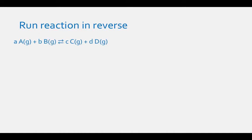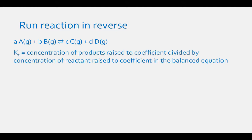What happens to the equilibrium constant expression if we run a reaction in reverse? For a generic reaction equation such as A (gas) plus B (gas) in equilibrium with C (gas) plus D (gas), Kc will equal the concentration of the products raised to their coefficients divided by the concentration of the reactants raised to their coefficients. Therefore, Kc equals the concentration of C raised to the power of c, times the concentration of D raised to the power of d, divided by the concentration of A raised to the power of a, times the concentration of B raised to the power of b.